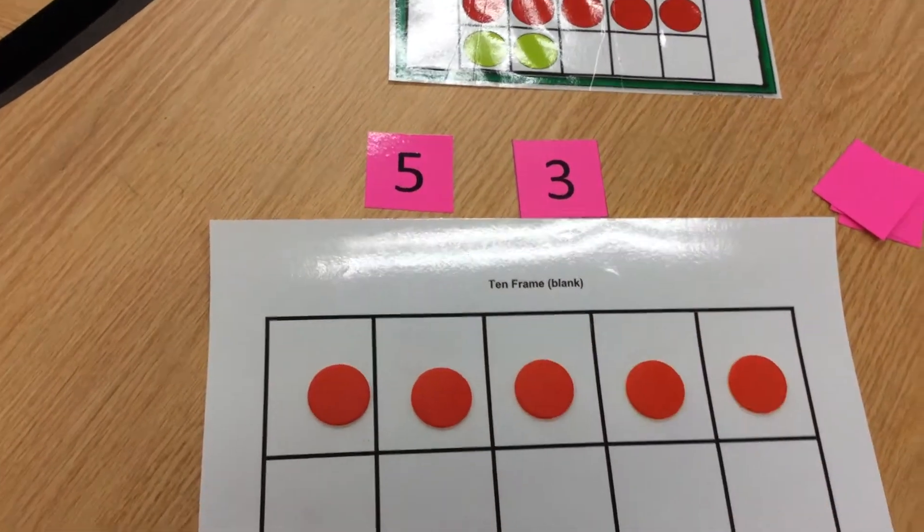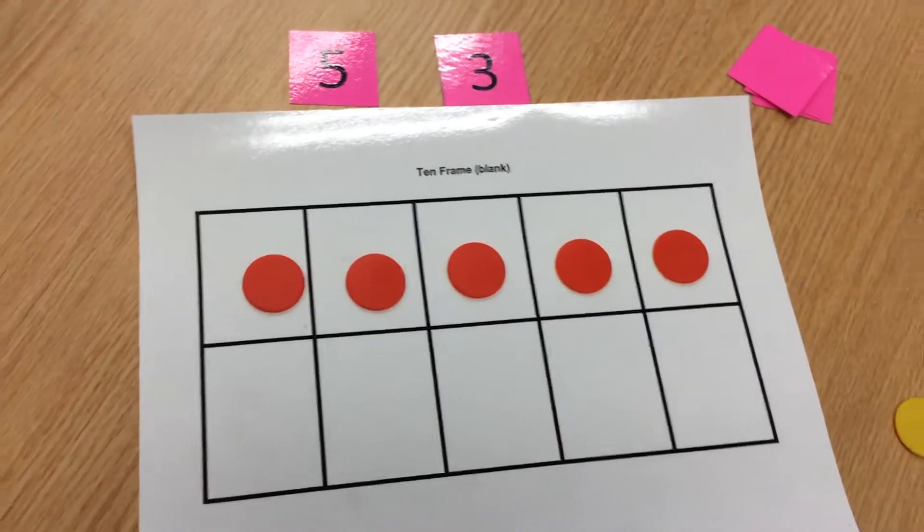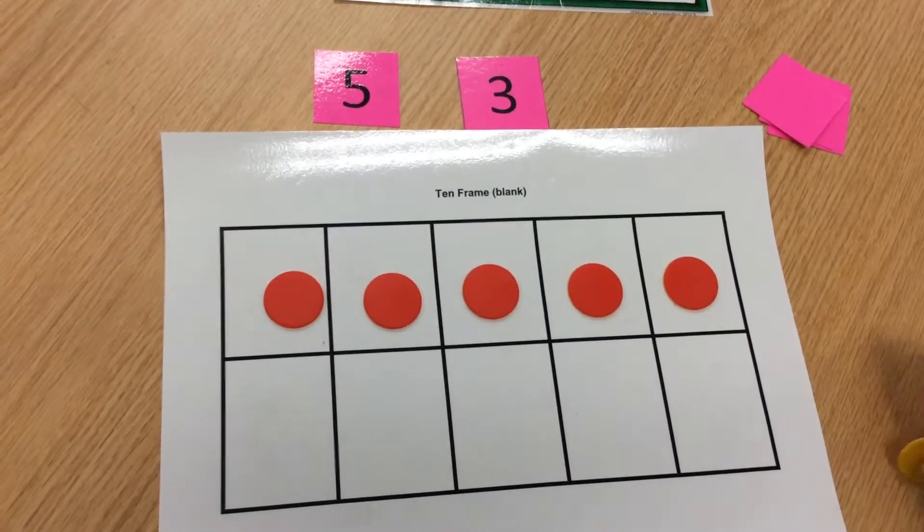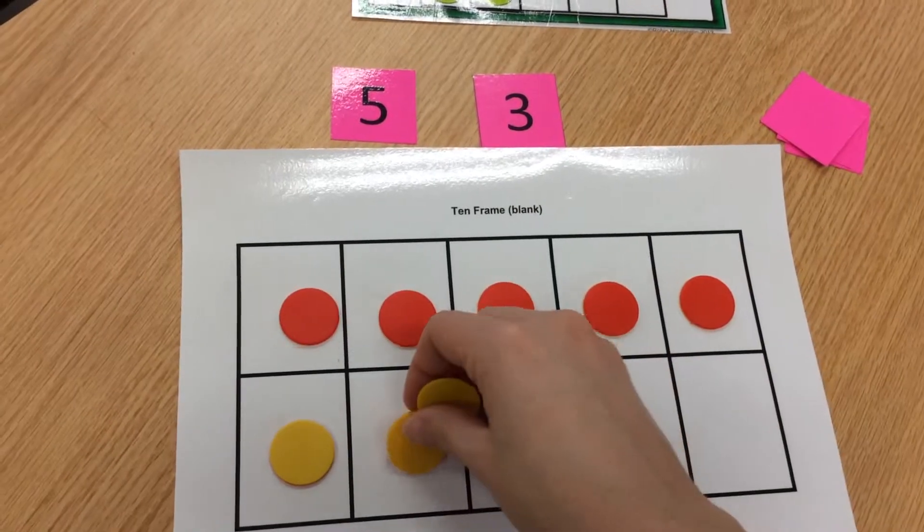The second number I'm going to now show in yellow. I'm going to add three yellow.